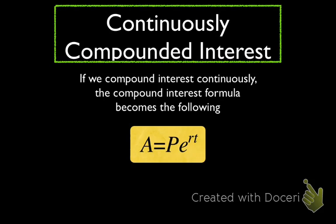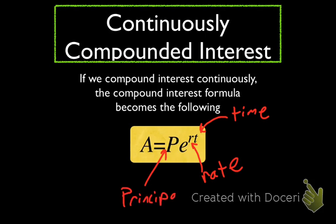Then that, that compound interest formula becomes this. This A equals P times e to the RT formula. Should we write down that description? I don't think you need to write the description down, but I'd definitely write the formula, and then I'll kind of point out what everything is here. T is time. R is the rate. P is the principle. And A is the amount in the account after T years.